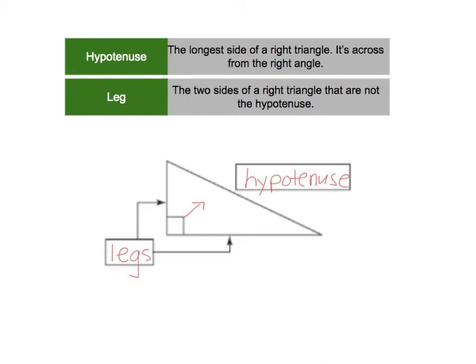Now the leg of a right triangle is a little bit different from the leg of an isosceles triangle. I know we talked about legs with isosceles triangles. Well, an isosceles triangle, the legs are the two congruent sides. In a right triangle, the legs are not necessarily congruent. In fact, they're usually not congruent. They're just the two sides that are not the hypotenuse. They're the two sides that are forming the 90 degree angle.